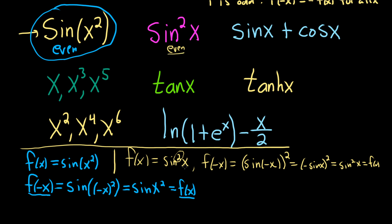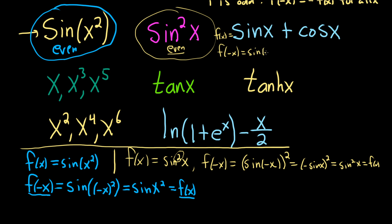Now sine x plus cosine x. If we call it f of x and replace x with negative x, we get sine of negative x plus cosine of negative x. Sine is odd, so that becomes negative sine x. Cosine is even, so that stays cosine x. We don't get f of x, and we also don't get negative f of x — that would require a negative on the cosine too. So this one is neither.